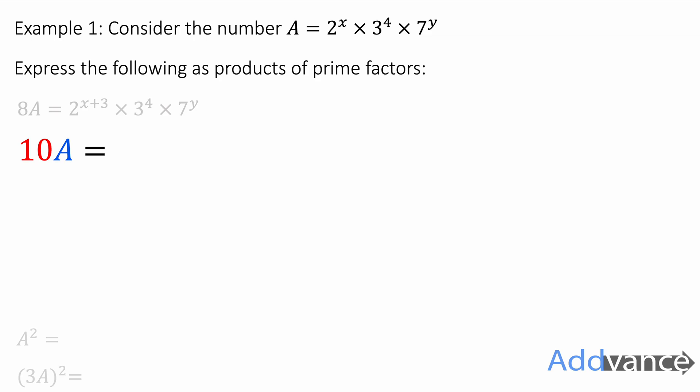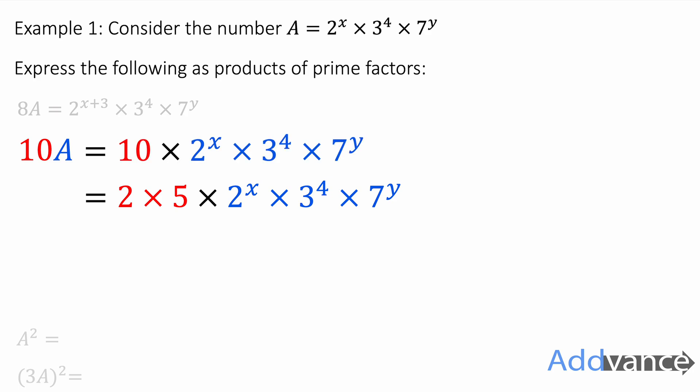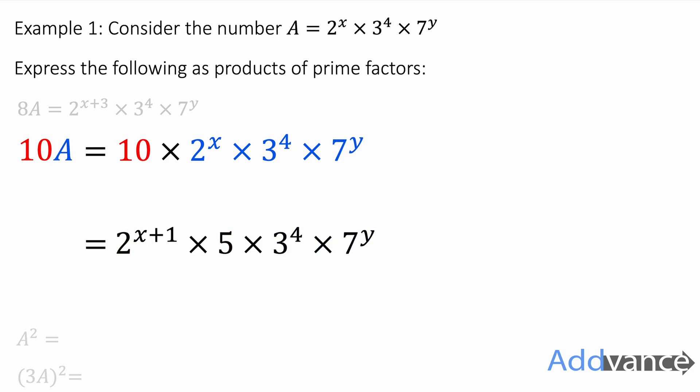Now let's look at 10a — that is 10 times our number. We can rewrite 10 as 2 times 5. So we can combine the powers of 2: we've got 2 to the power of 1 times 2 to the power of x, and we add the powers to get 2 to the power of x plus 1. So 10a is 2 to the power of (x+1) times 3 to the power of 4 times 5 times 7 to the power of y.